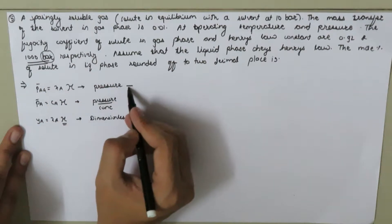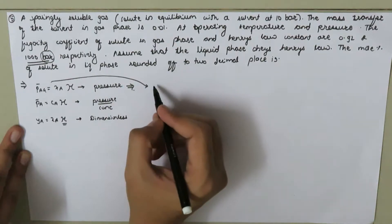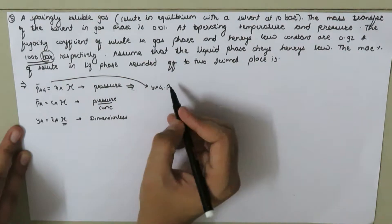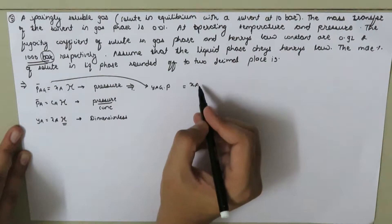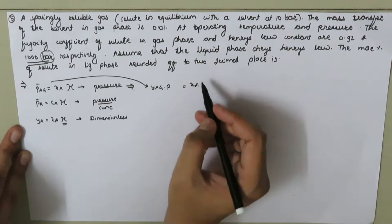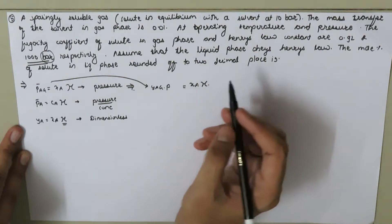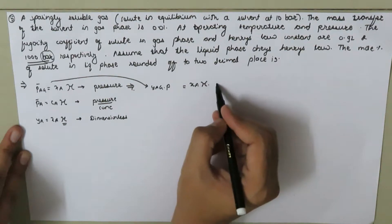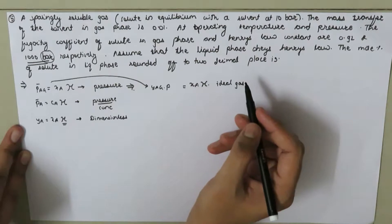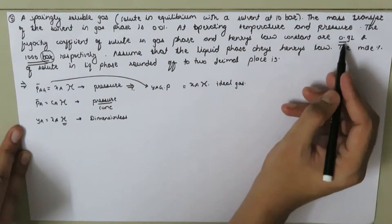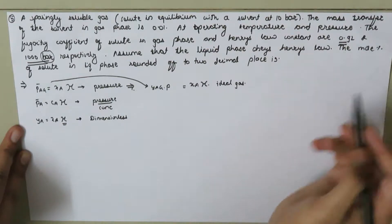In this problem, the Henry's constant is given in bar, so we use the first expression. The partial pressure can be written as the mole fraction y_AG times the total pressure, which equals the mole fraction of component A in the liquid, x_A, times the Henry's constant H. However, this is only valid for an ideal gas. Since the fugacity coefficient is given as 0.92, we apply the correction to this equation.